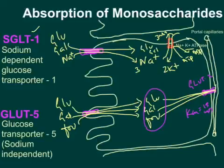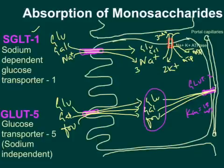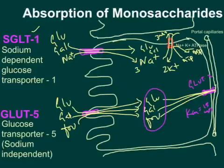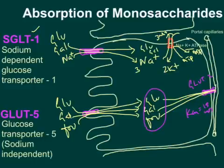On the brush border surface we have two transporters: SGLT1, dependent on the sodium gradient, and GLUT5, dependent on the gradient of the monosaccharide itself. Having two transporters ensures that if one is mutated — say SGLT1 — GLUT5 can compensate. These monosaccharides are osmotically active compounds that can draw water into the lumen causing osmotic diarrhea, which is prevented by efficient absorption via these transporters.